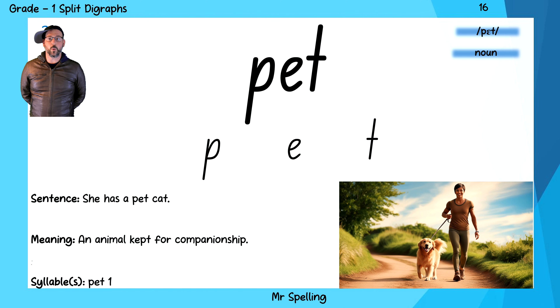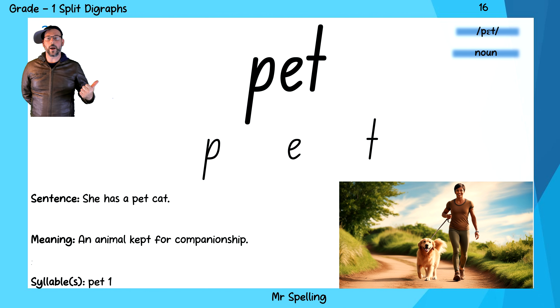Now, the next word on our list is the word pet. I have a pet duck. Pet. And the sounds of pet are P, E, T — pet.